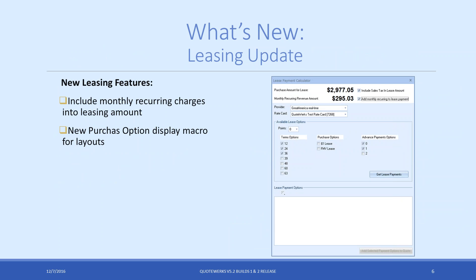One of the other features we added was an update to our leasing integration. Leasing integration will allow you to basically convert any document in QuoteWorks to a monthly payment. We've also added the ability to add monthly recurring charges into that leasing amount so you can give the customer just a single monthly payment. It's a nice feature — if you don't want to separate the leasing amounts from the one-time and monthly recurring items, you can bundle everything together.